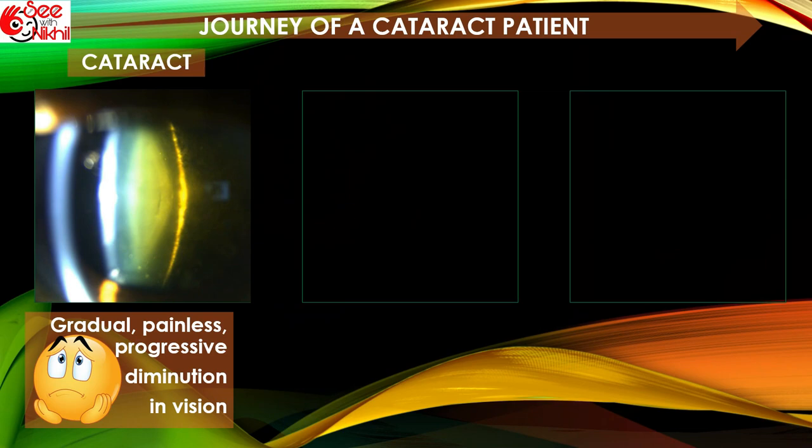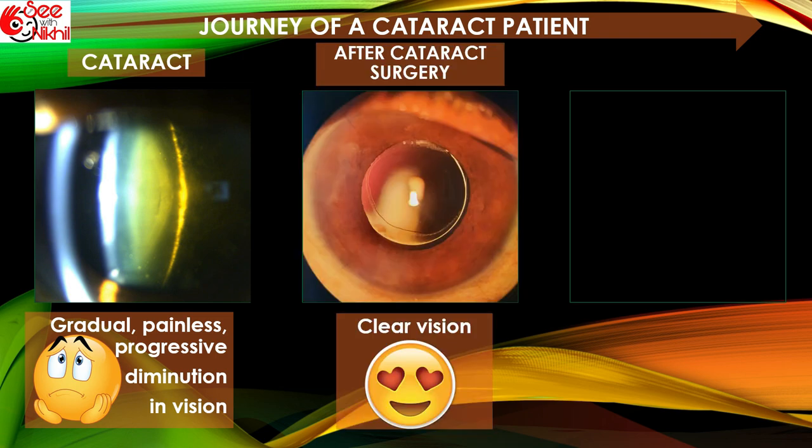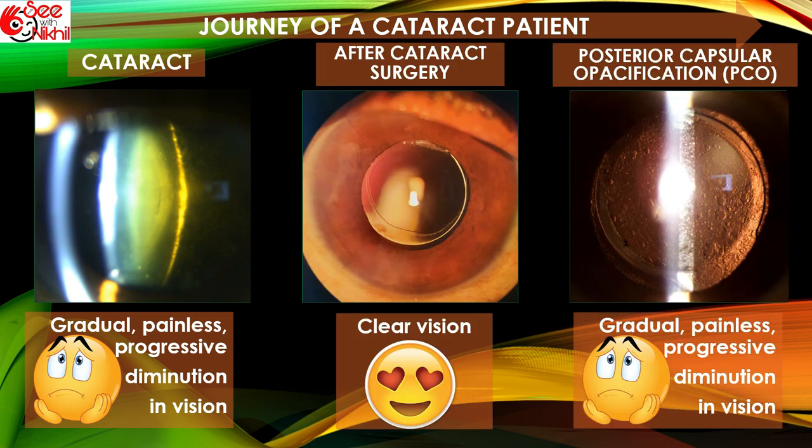The journey of a cataract patient goes from having gradual painless progressive diminution of vision due to cataract, to getting pristine clear vision after cataract surgery. But after a few years this vision again starts to decrease due to formation of posterior capsular opacification.